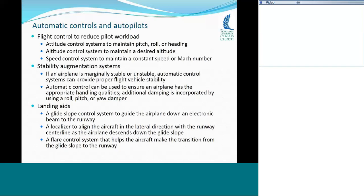Another reason is stability augmentation systems. Most airplanes, if built correctly, are inherently stable — like a paper airplane that flies pretty much straight and maintains nose-up attitude. Some aircraft are marginally stable just because of how they're built. Most fighter aircraft are designed to be marginally stable because that makes them more maneuverable. If an aircraft is marginally stable or unstable, you basically have to have some kind of automatic control to make the platform stable — that's what a stability augmentation system does.